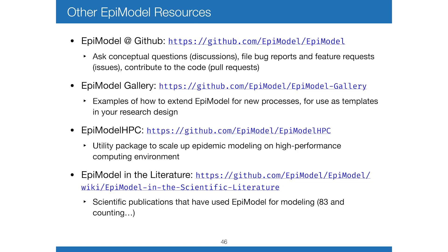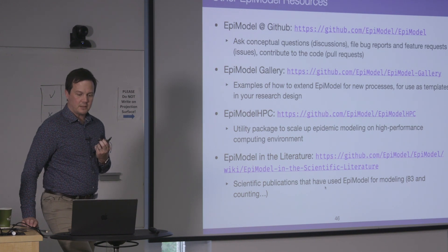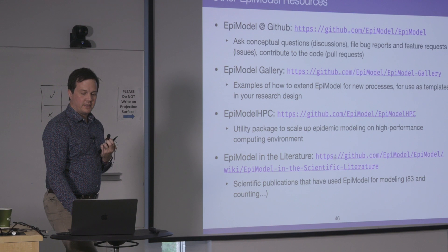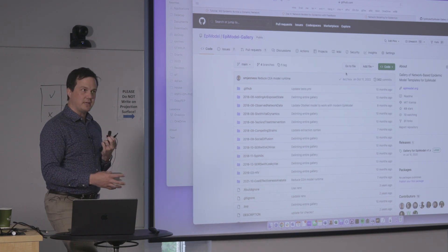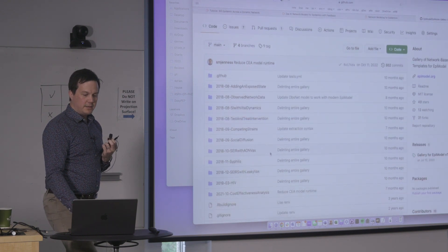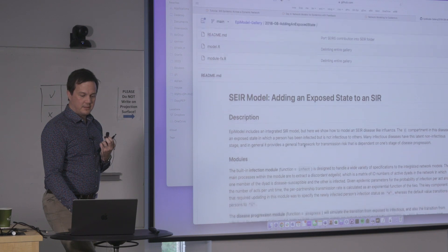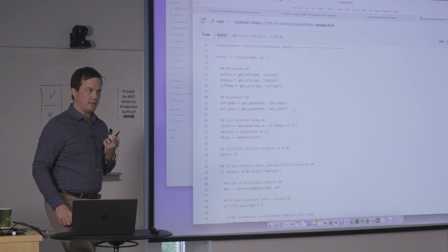Our main software presence is on GitHub — a useful place to ask questions, interact with us as developers and epidemiologists, file bug reports, and actually contribute to the code as some users have. We also have a gallery of examples called the EpiModel Gallery, intended as a pathway or template for how to extend a built-in model for a complicated research question. For example, if you want to take an SIR model and add an exposed state to make an SEIR, we have an example showing what that involves, including the module code that gets plugged into EpiModel.